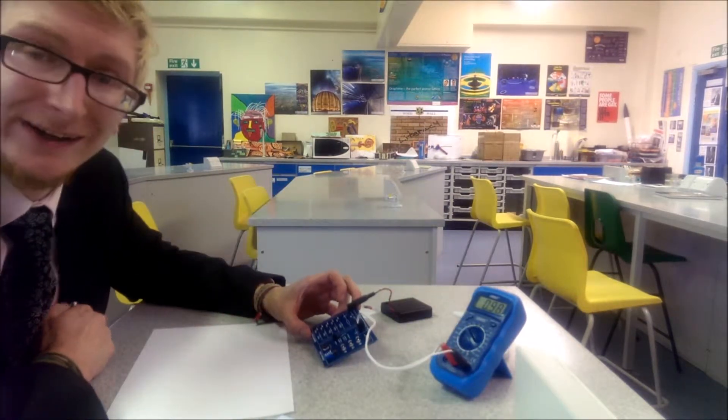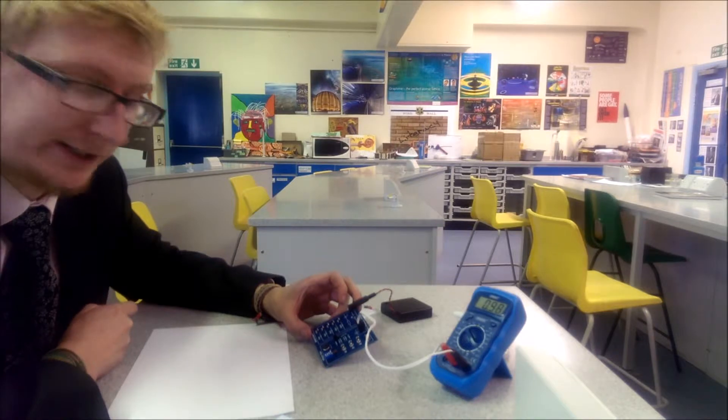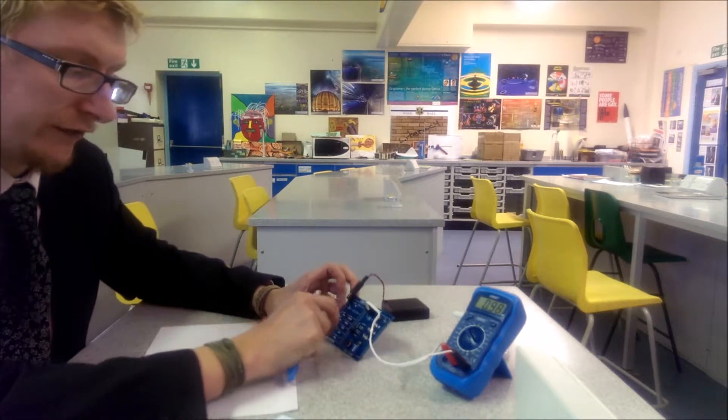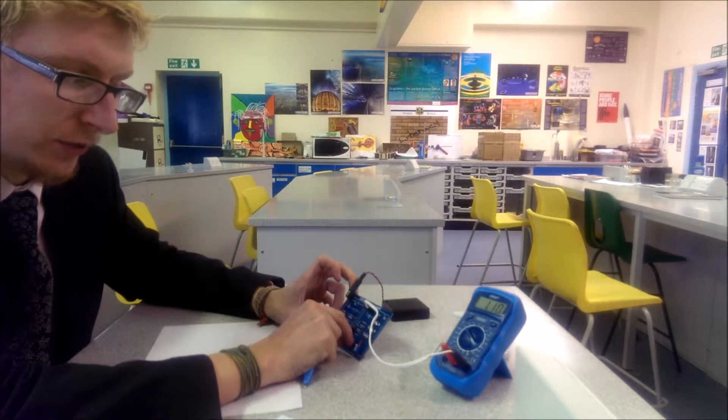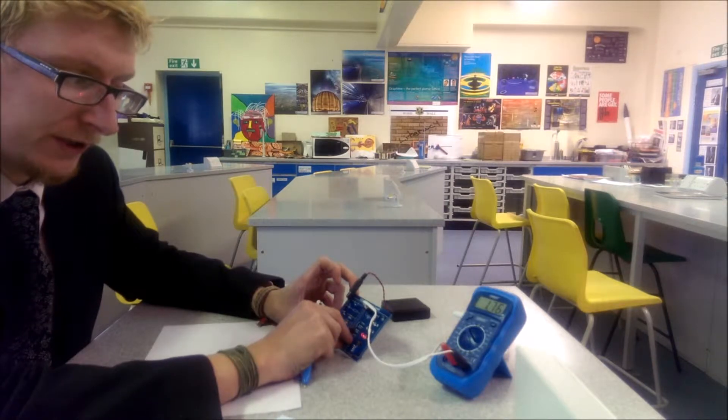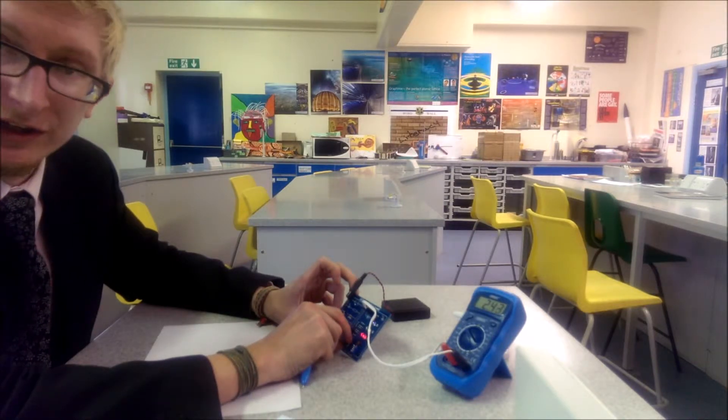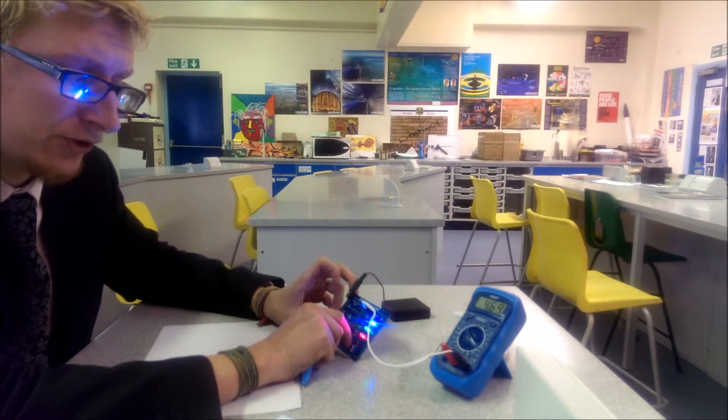This is currently telling us that there are 0.98 volts across the LEDs. If I increase this, you will see that at some point the lights begin to come on. Red first, then green and eventually blue.